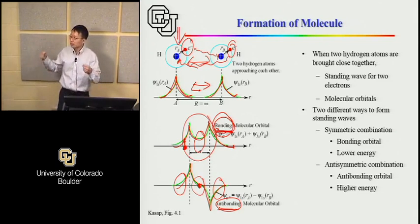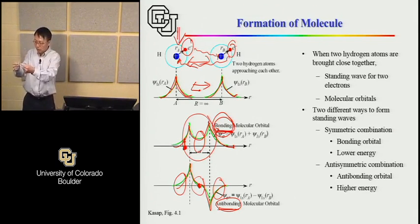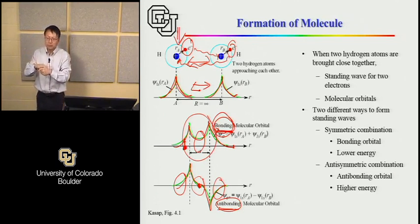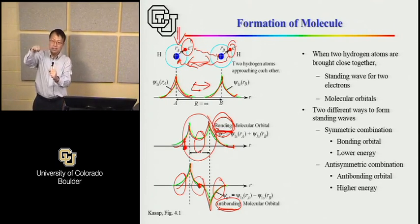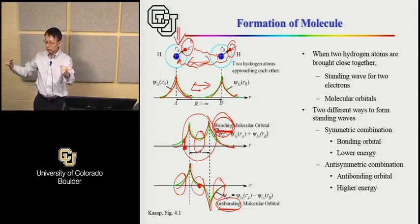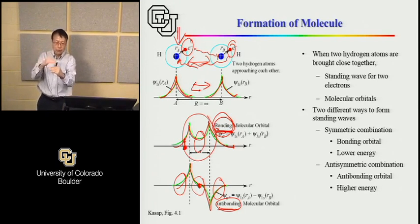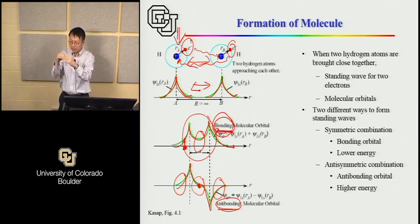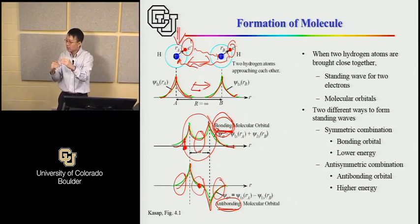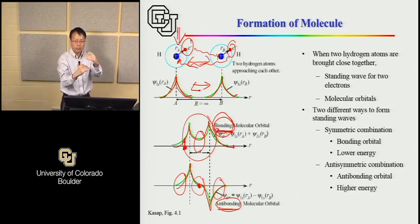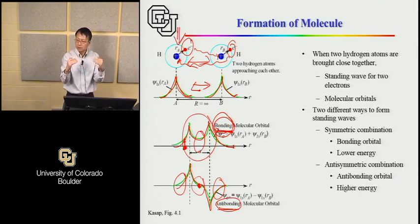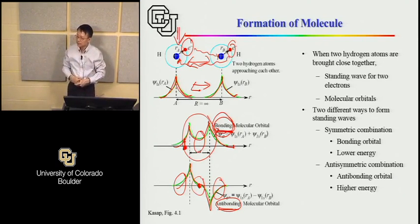By bringing two atoms close together we create two energy levels. This happens for each atomic energy level — in a single atom you have a discrete set of energy levels. When you bring two atoms close together, each of those atomic energy levels splits into two: one lower energy state (bonding orbital, symmetric combination) and one higher energy state (antibonding orbital, antisymmetric combination). This happens at every energy level of the individual atom.